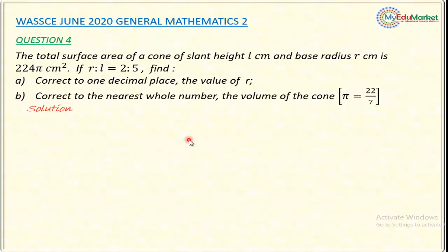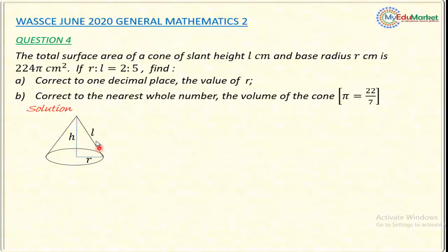Let me attempt to answer this question. Sketching the cone, I have the radius, the slant height, and the vertical height. The ratio R to L is 2 to 5. I can write it in fractional form as R over L equals 2 over 5, because in the formula for surface area of a cone, I have both R and L.